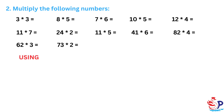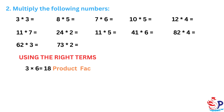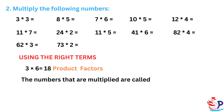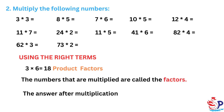Using the right terms: 3 times 6 equals 18. The numbers that are multiplied are called the factors. The answer after multiplication is called the product.